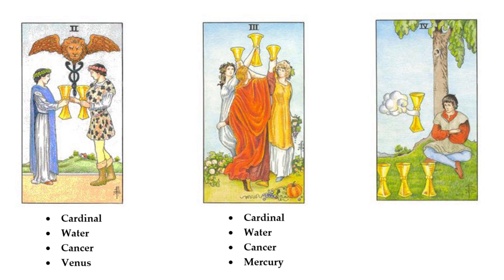Threes are group dynamics, and with Cancer, this is your family, your friends, your loved ones — very different to, say, the Three of Pentacles, which is Capricorn, and therefore more likely to be work-orientated: your boss, your work colleagues. The Four of Cups is cardinal water, Cancer in the Moon, instantly plunging the energy here into its shadow aspect — quite a dramatic change in meaning, a rejection of what is loving and nurturing.